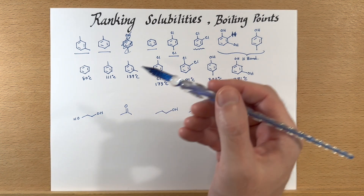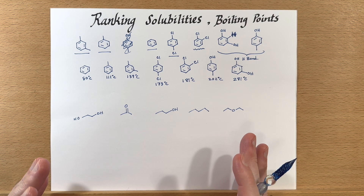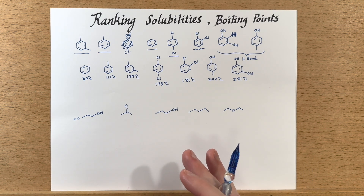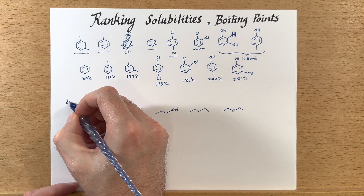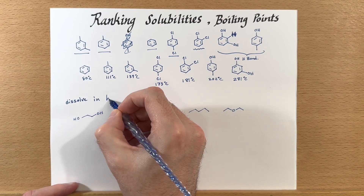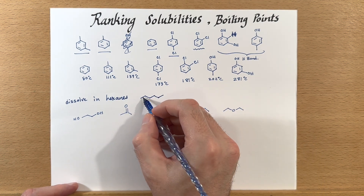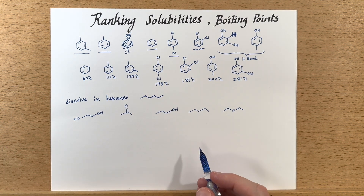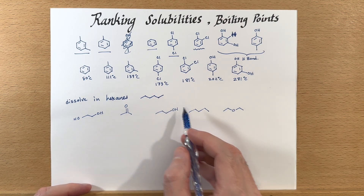Now let's jump down to the second list and talk about solubility. It really depends on what kind of solvent you're using, and the order would be completely different with a different solvent. Let's look at what it would be if we're trying to dissolve each of these in hexanes — hexanes is just a six-carbon-long chain.